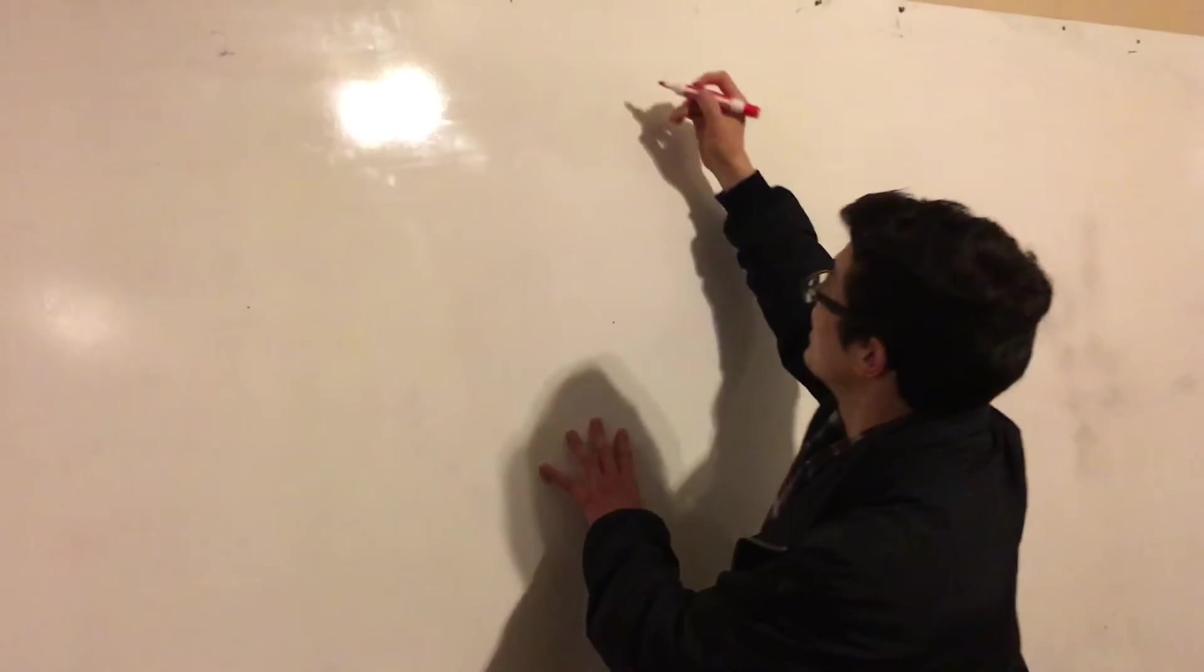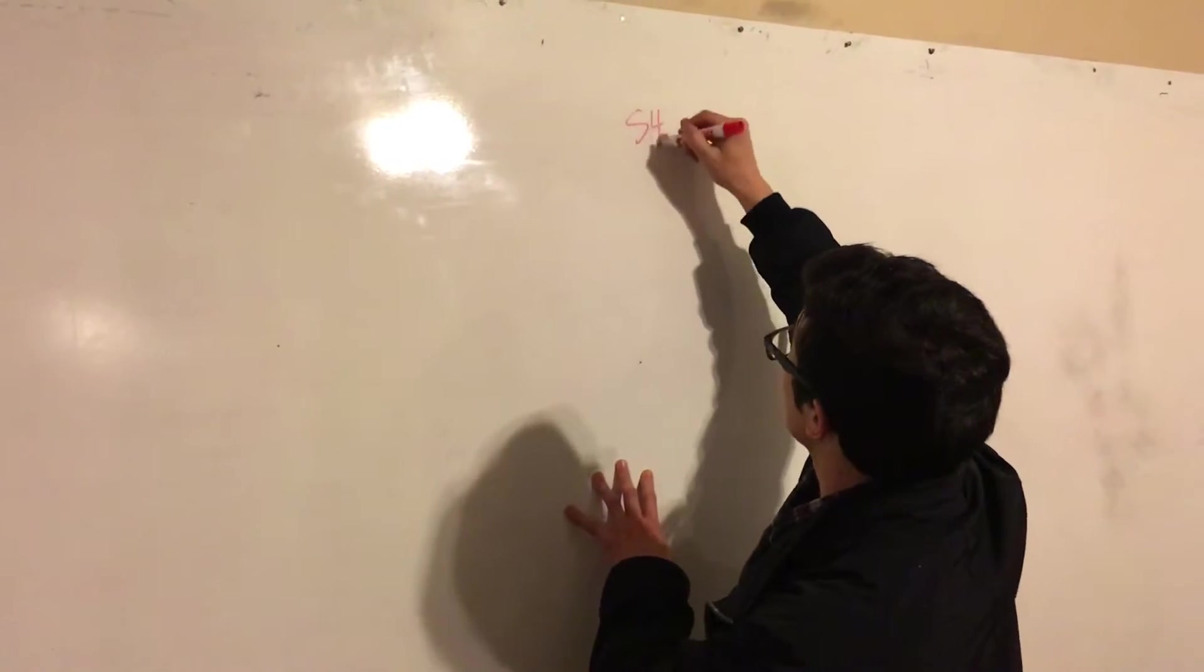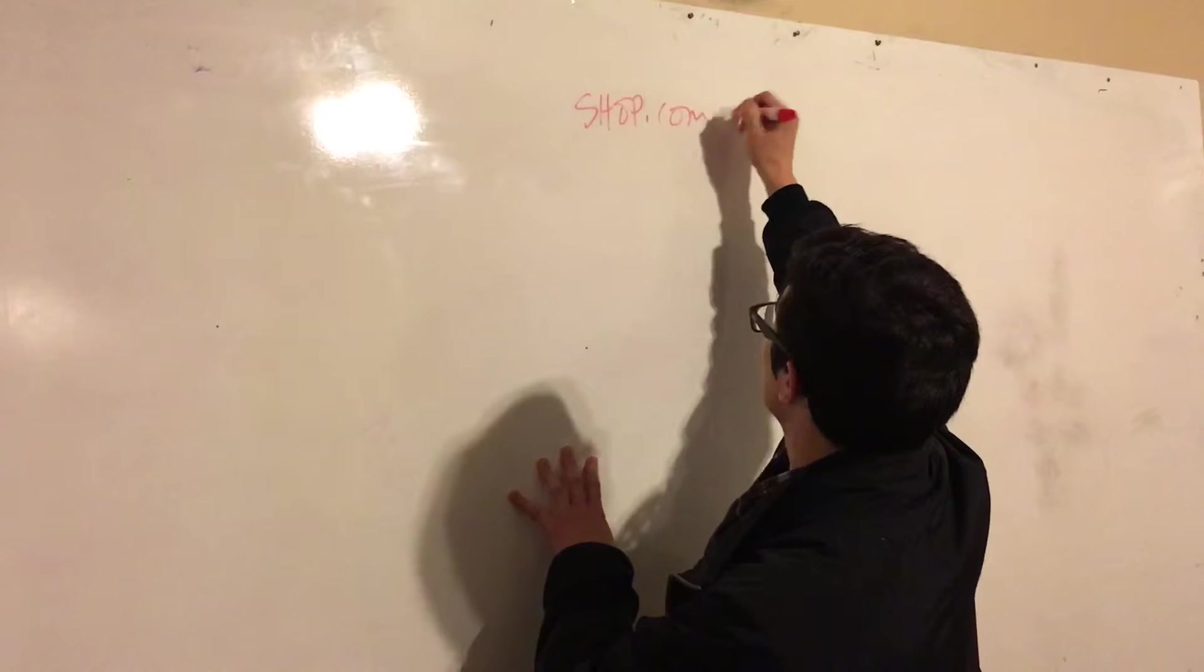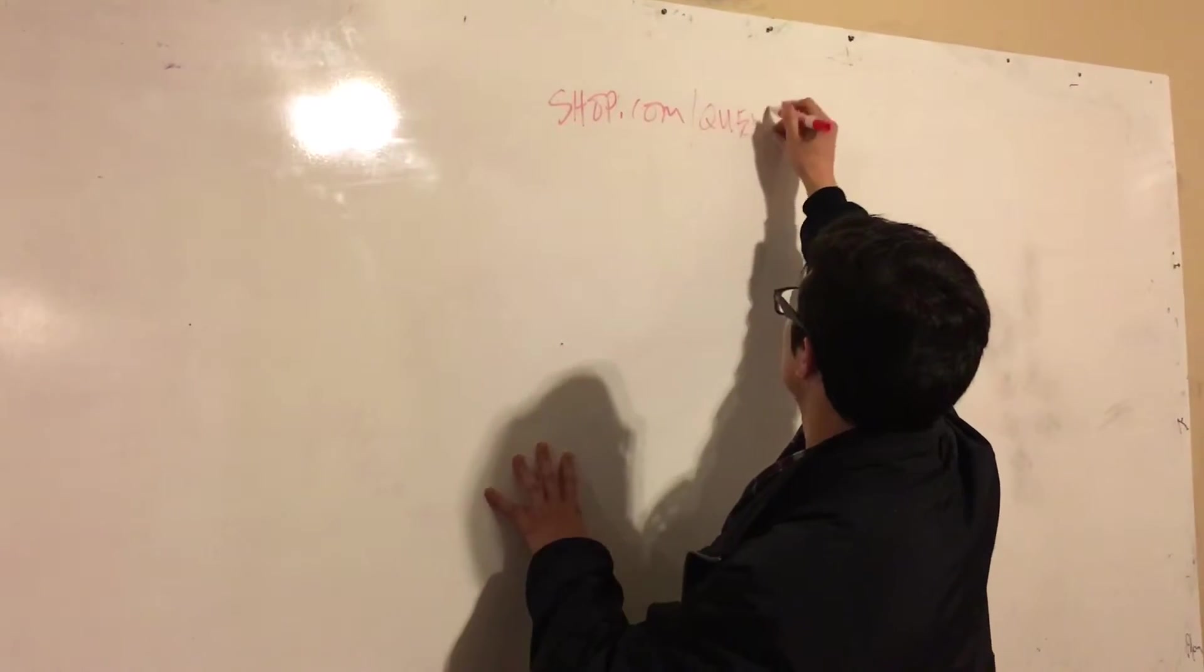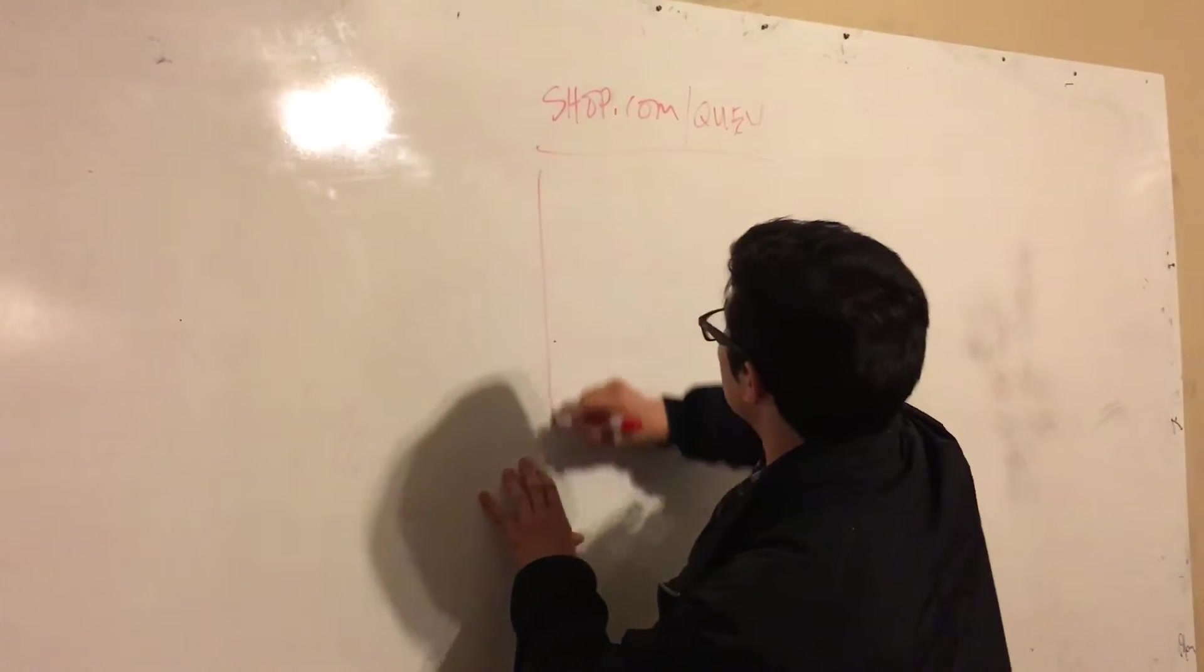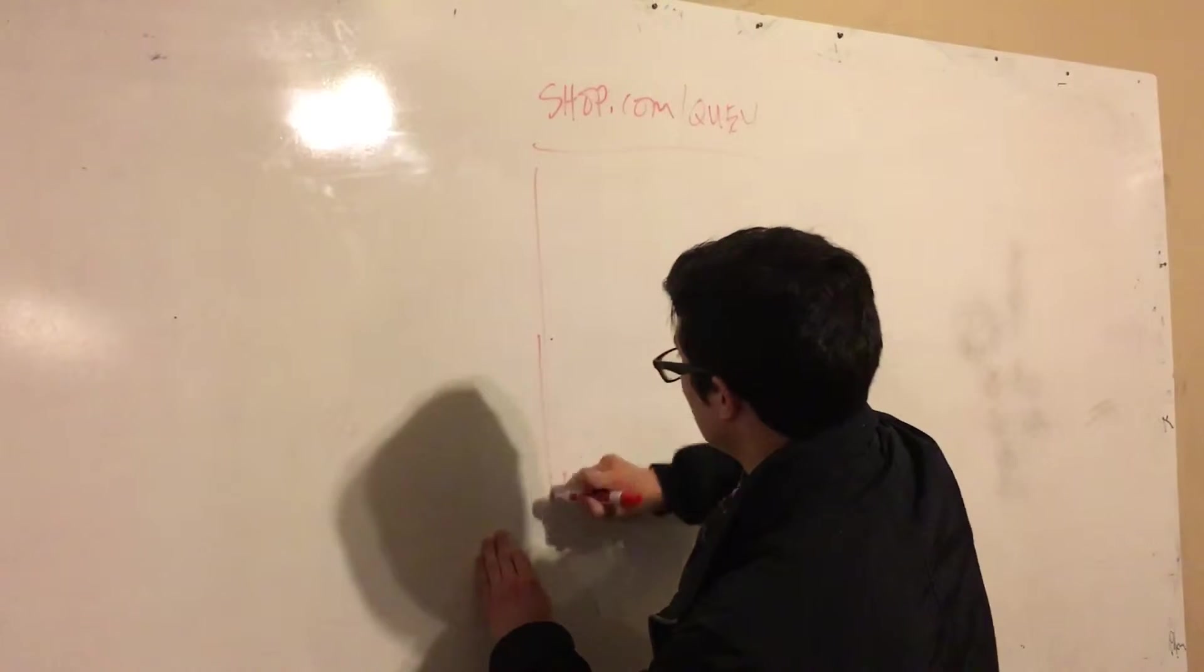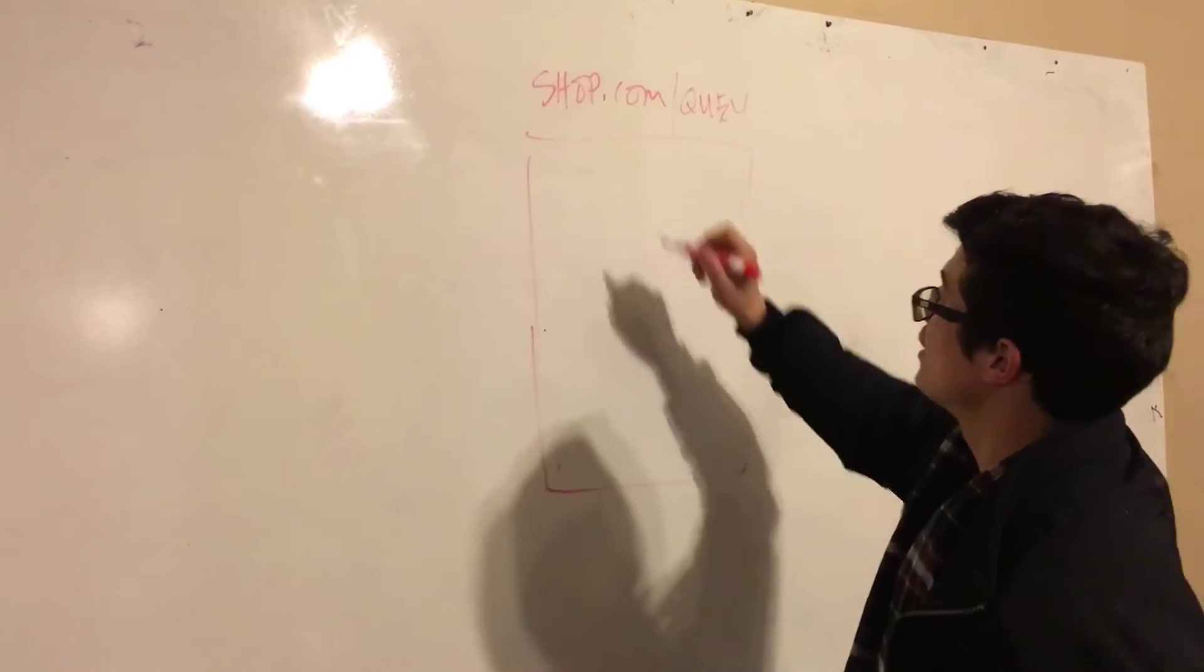What this would look like is you have your very own shop.com, backslash Quay. With this you have your own piece of internet real estate where right off the bat you have partnerships with Google and Microsoft powering your website, keeping it live 24/7.